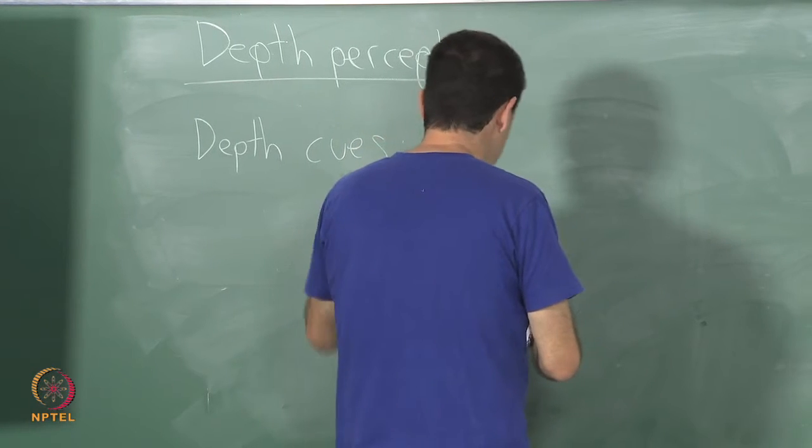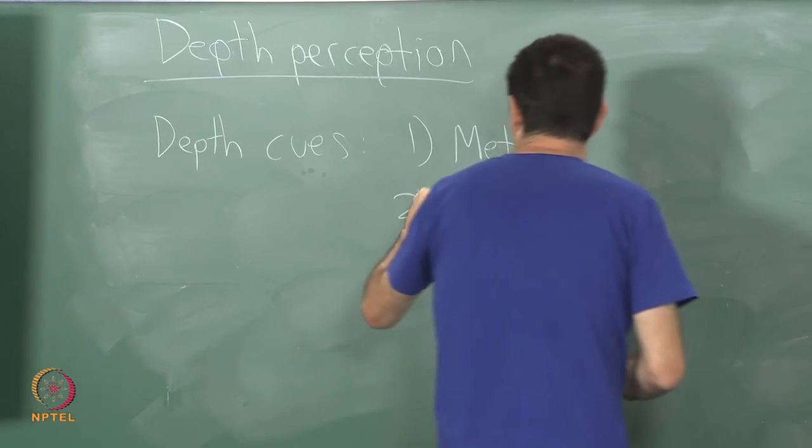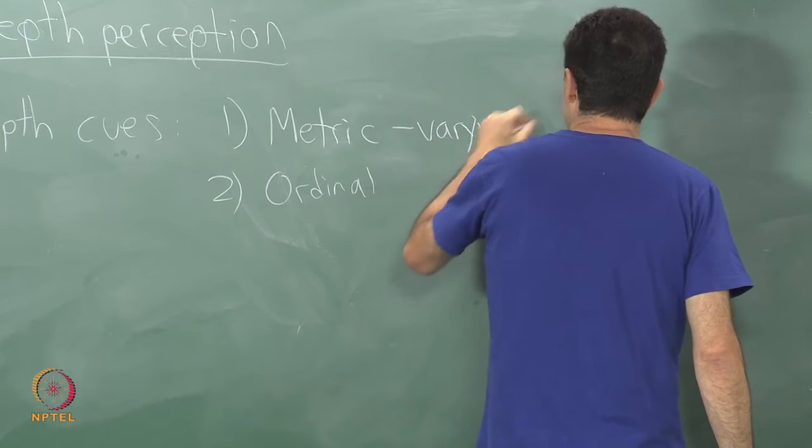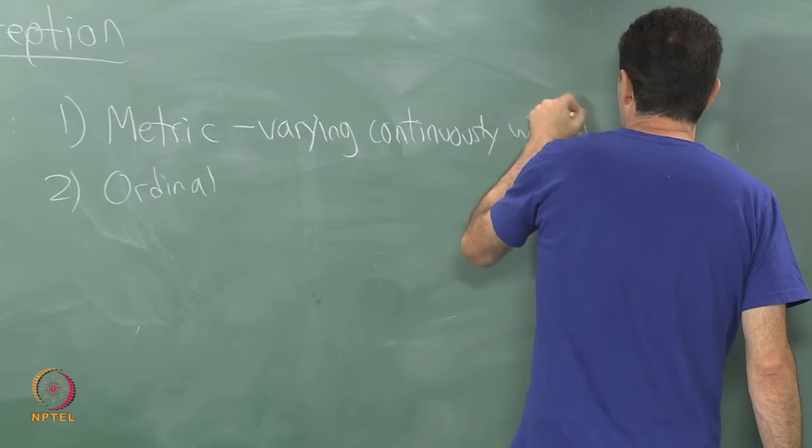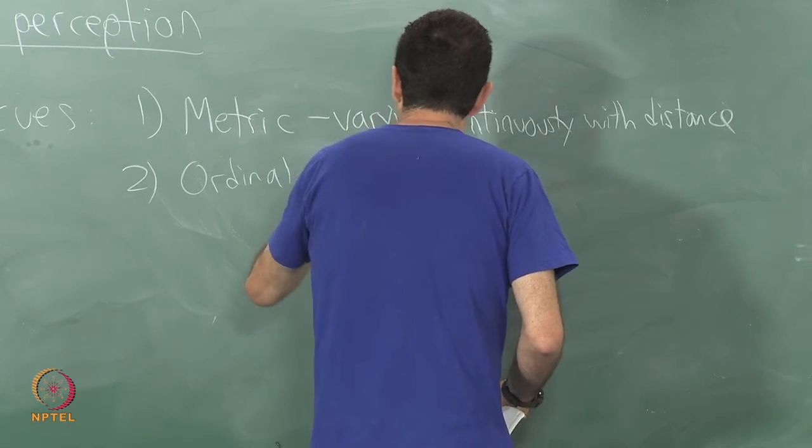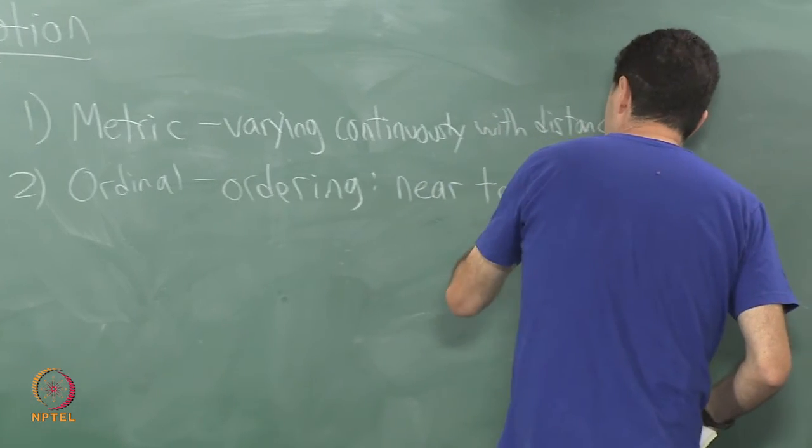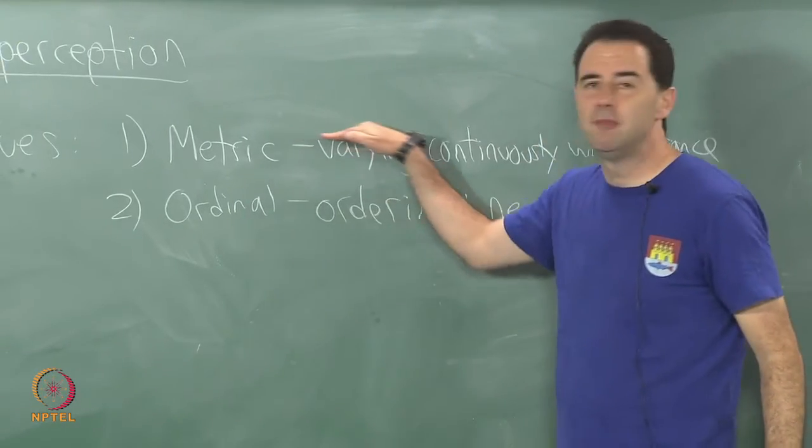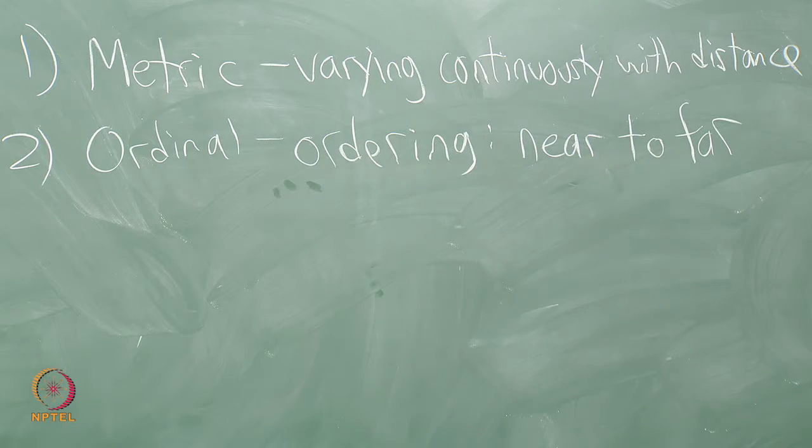There are two different kinds of depth cues, one nice way to separate them is into what I'll call metric and ordinal. In other words, metric is going to be varying continuously with distance and ordinal is about ordering as the name suggests, for example near to far. Another way to name these: number one could be continuous if you like and number two could be combinatorial, it could appeal to the computer scientist in you if you have that background.